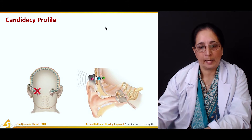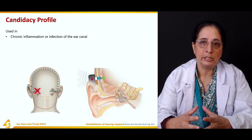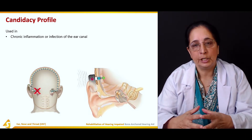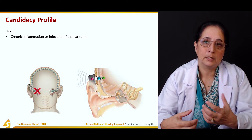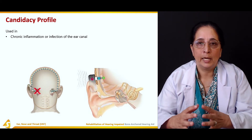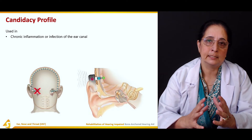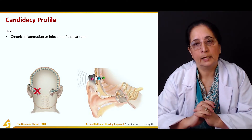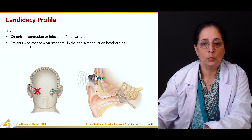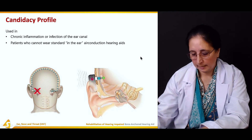The candidacy profile includes patients with chronic inflammation or infection of the ear canal. As mentioned previously, infection or inflammation is a contraindication for conventional hearing aids because it can obstruct sound transmission to the middle ear. In such cases, we prefer bone anchored hearing aids. It is also indicated for patients who cannot wear standard in-the-ear or air conduction hearing aids.